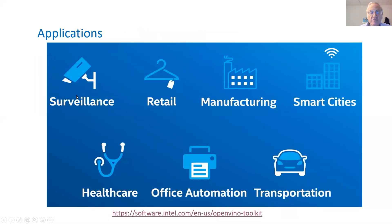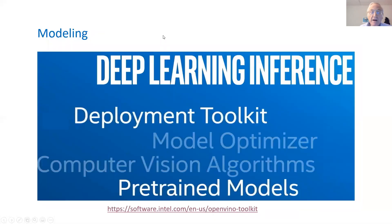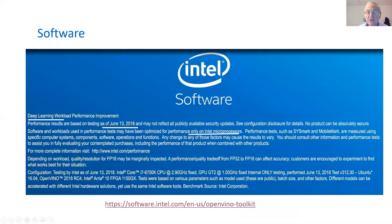The applications are enormous — surveillance, retail, manufacturing, smart cities, healthcare, office automation, and transportation. The modeling is an important part of it. Intel has a pre-trained model to make our life a little easier. The software is also part of the kit, and the deep learning workload was recently tested by Intel. We're talking state-of-the-art technology, and since they have an edge, this is currently only applicable to Intel microprocessors.